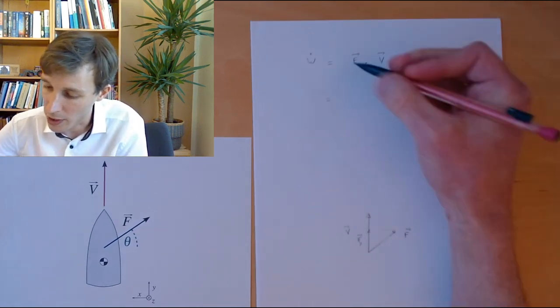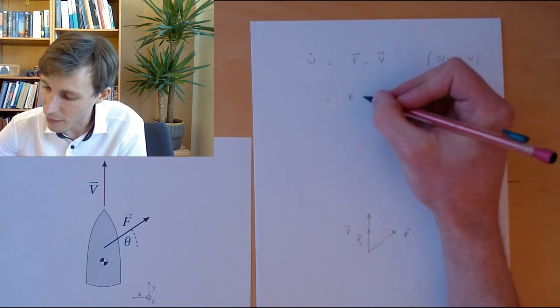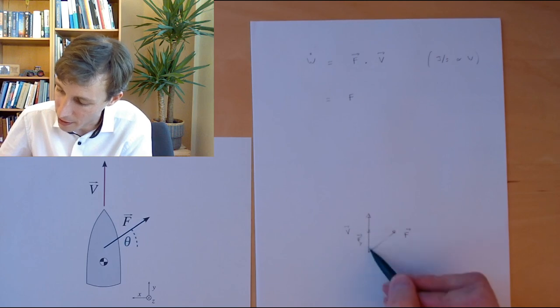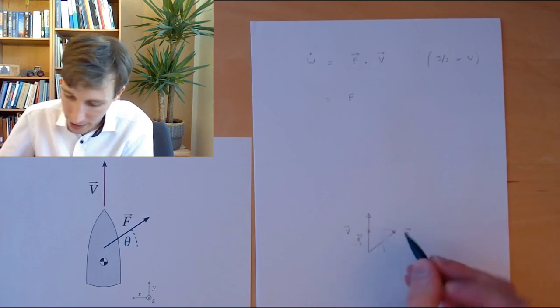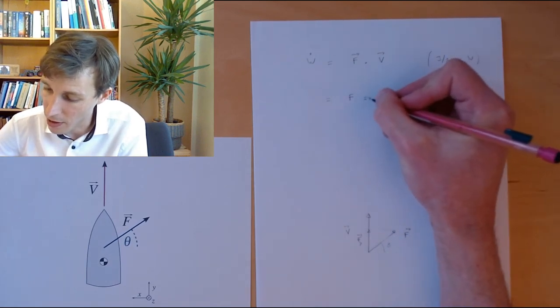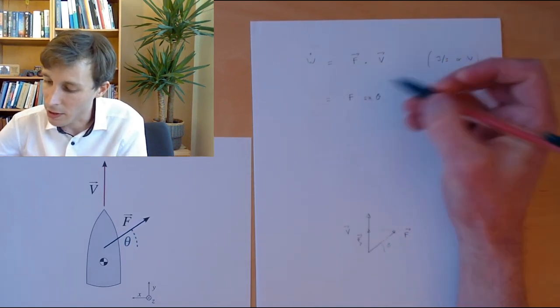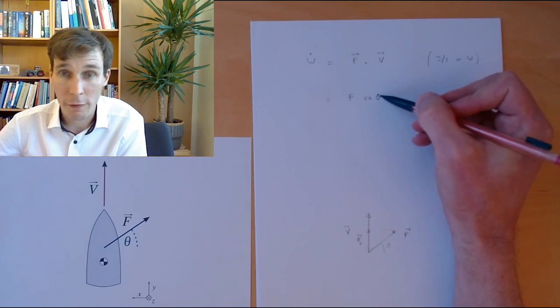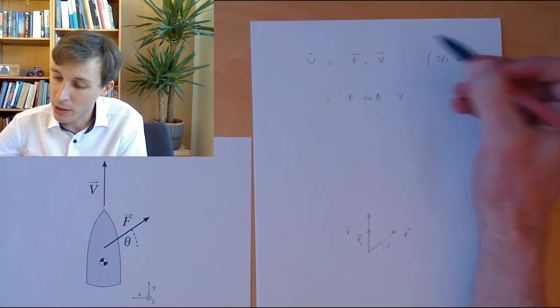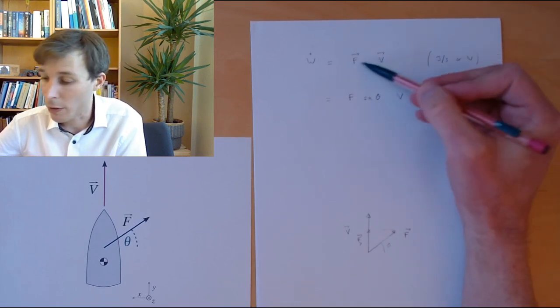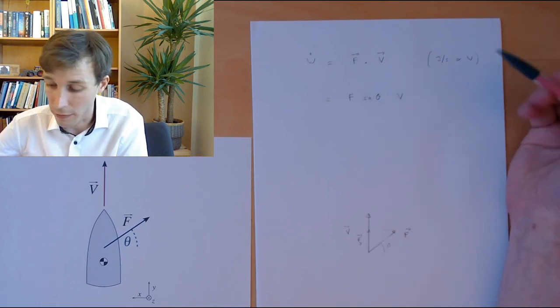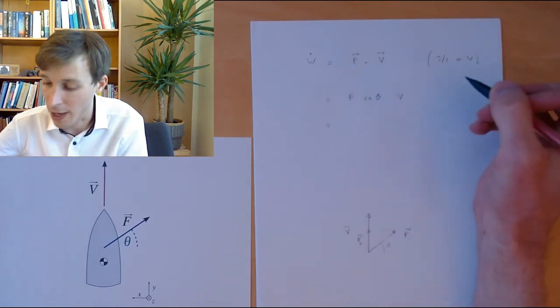So what we're going to do here is to take the length F and project this length. Since we know that the angle theta is on this side, to get that value, I need to take the sine of theta. So this is the component of F that's along V. And I have to multiply this by the length of V. So now we went from a dot product of two vectors to just lengths, just numbers.